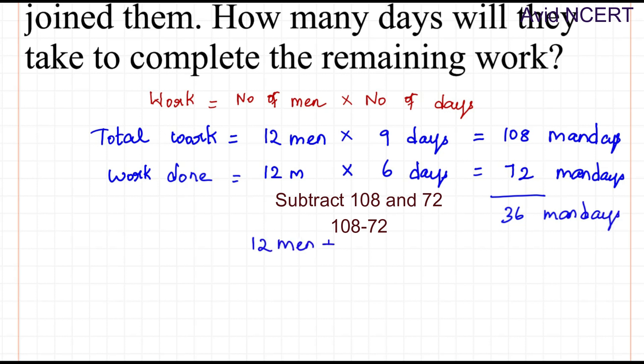So which is 12 men plus 6 men times how many days? How many days will they take to complete the work? We don't know the number of days they can take, so we are taking it as x. To finish the 36 man-days of work, 12 plus 6 equals 18 men times x equals 36.